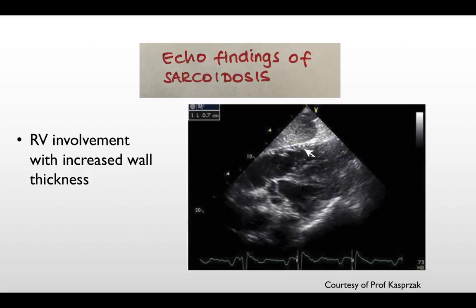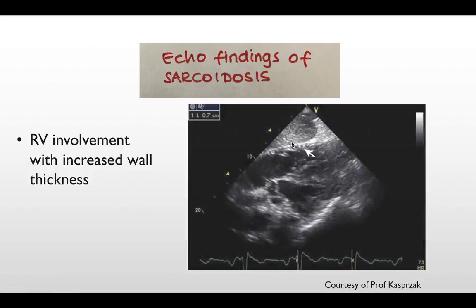Another important feature we expect to see in patients with sarcoid heart is involvement of the right ventricle. This subcostal four-chamber view shows clearly there is increased thickness of the right ventricular free wall. The normal thickness in this view is up to 5 mm, and this measurement is about 7 mm, which is obviously thicker than normal.